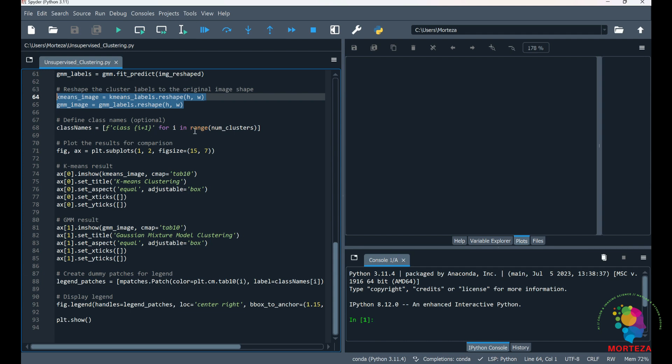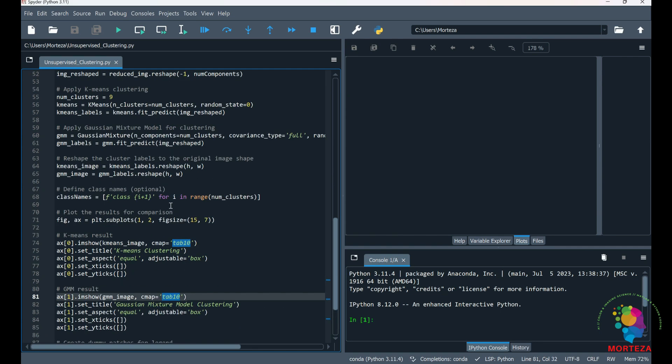And then I'm going to be reshaping the cluster labels into the original image shape. This is where I'm going to be defining the class name. This is optional. And then I'm going to be plotting the results for both k-means and Gaussian mixture model. Let's run it and see what happens.